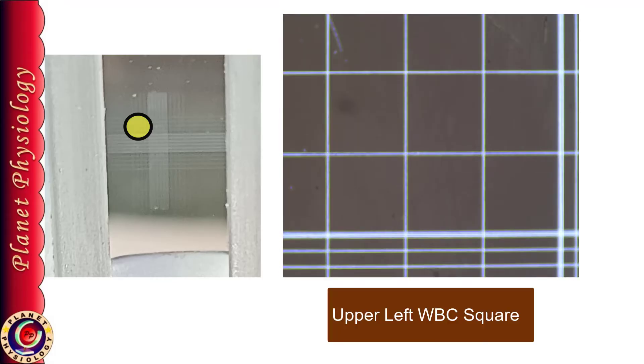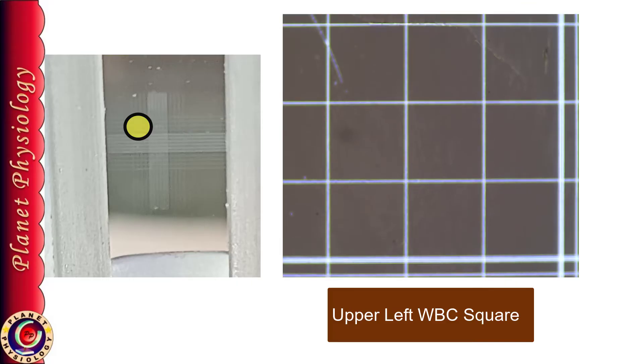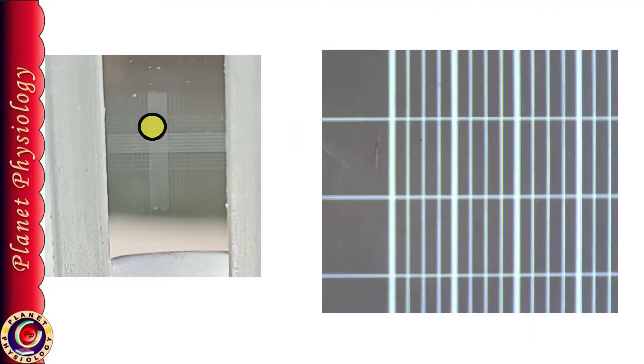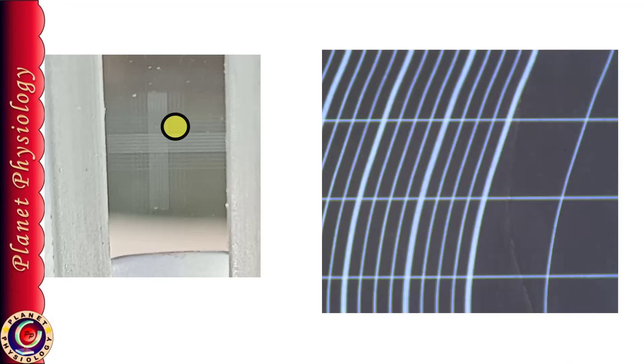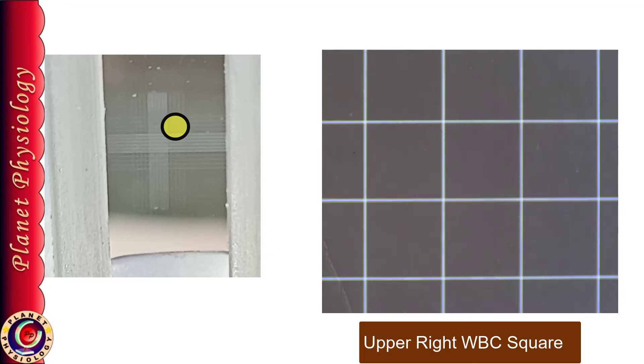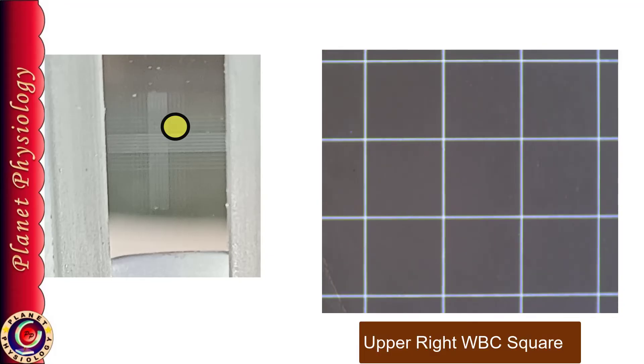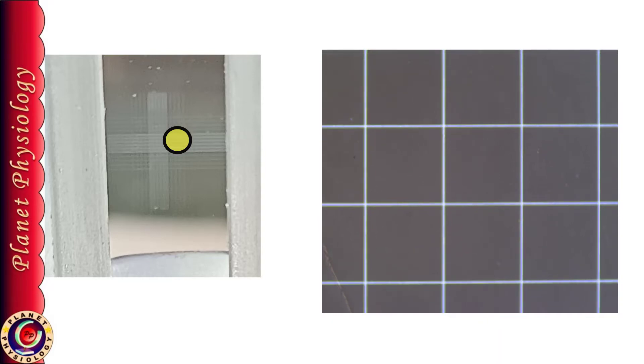From here now I am moving my stage towards the right side till I get a similar square. Now I have reached to the upper right WBC square and move down to get lower right WBC square.